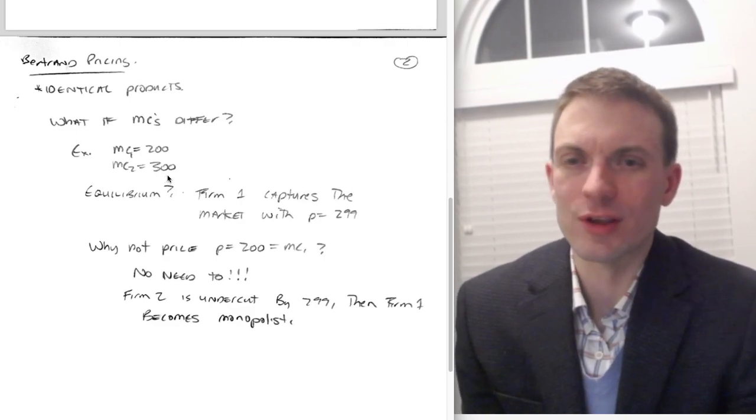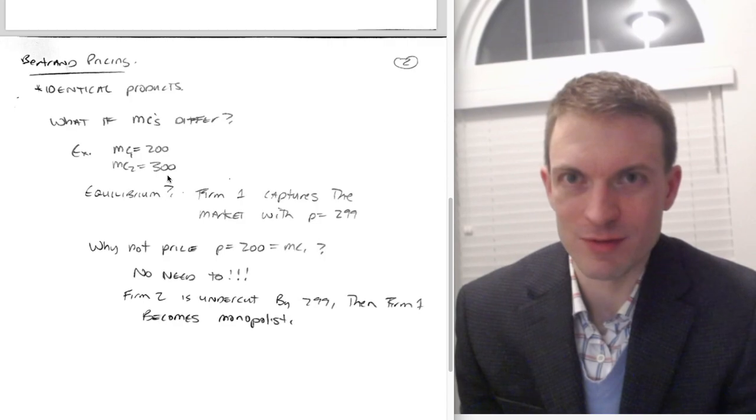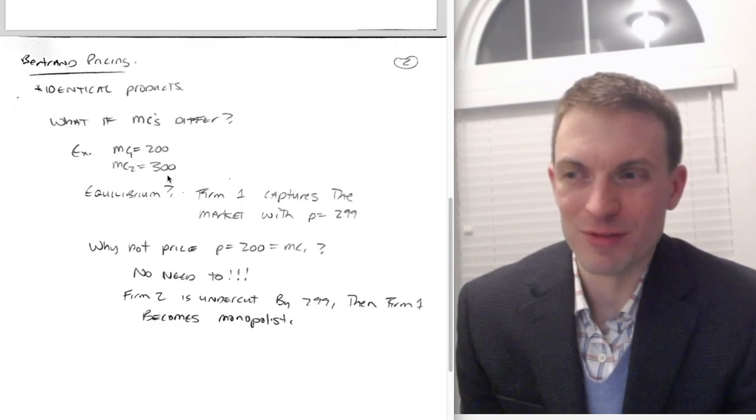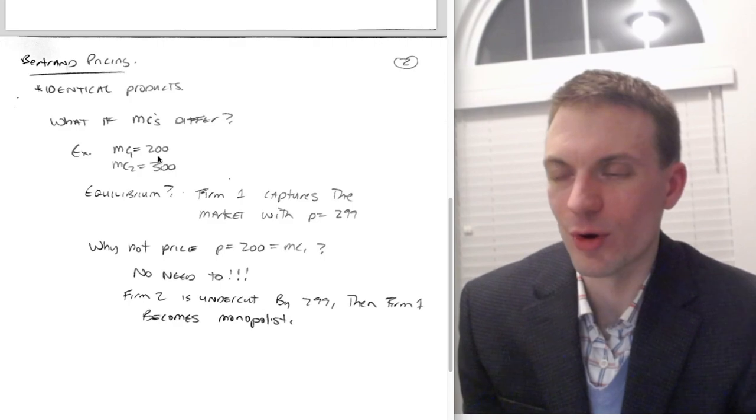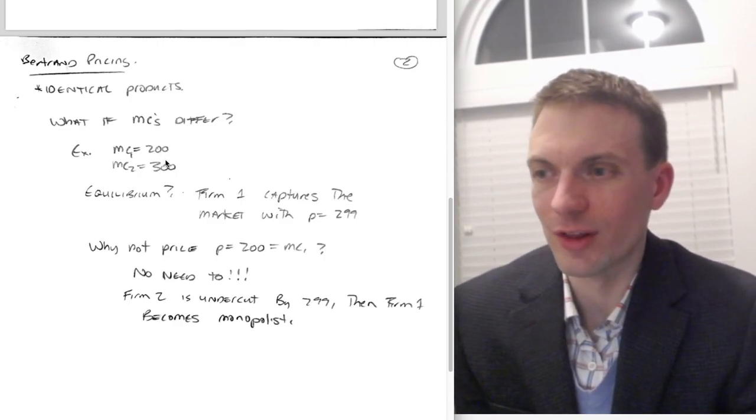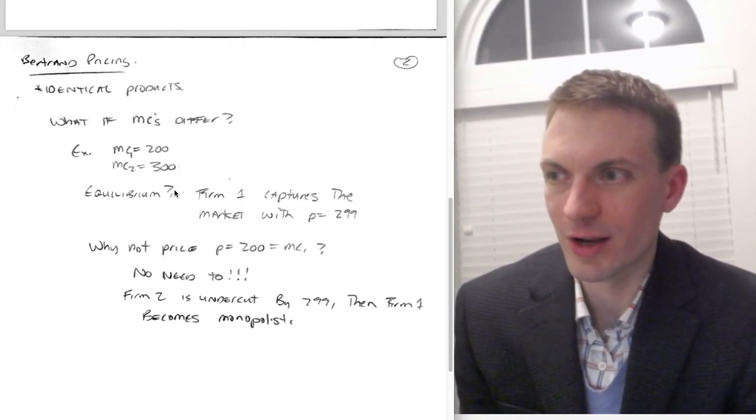And then you can clearly see that's a Nash equilibrium, right? Firm one can't gain by deviating—if they price a little bit higher, they tie and then they split the market with firm two. If they price lower, well then they're just leaving money on the table. So of course firm one's gonna price as high as they can to still undercut firm two, and that would be our Bertrand equilibrium in this case.